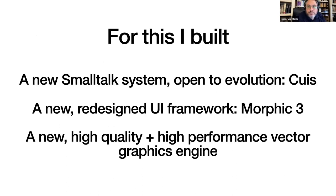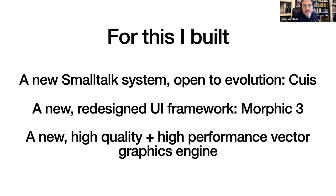So what is needed to make this real? I needed a new Smalltalk system that could evolve — not tied to whatever was built at that time. I'm talking about Squeak. I needed something like Squeak but that could evolve. The result is Cuis Smalltalk. And I needed a new redesigned user interface framework that I called Morphic 3. And then a better graphics engine.